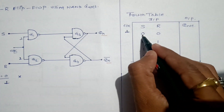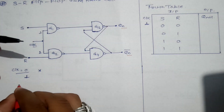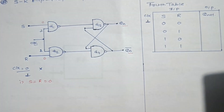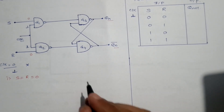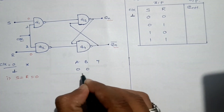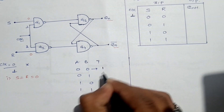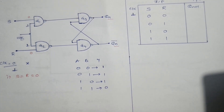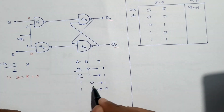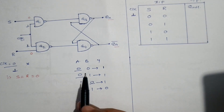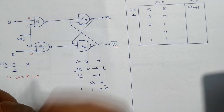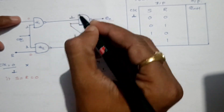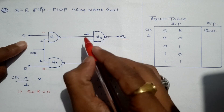SR flip-flop has two inputs S and R, with combinations: 00, 01, 10, or 11. Let's start with the first combination: S=0, R=0. From the NAND gate truth table, when both inputs are 0 the output is 1, and when both inputs are 1 the output is 0. Also, if any one input is 0, the NAND gate output is 1. So for G1, since one input is 0, the output is 1. Similarly for G2, one input is 0, so the output is 1.